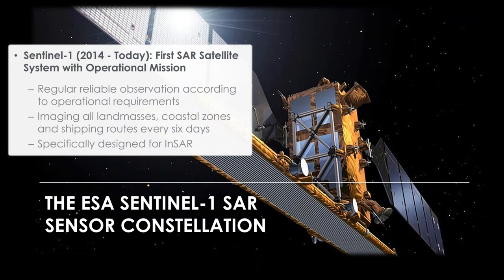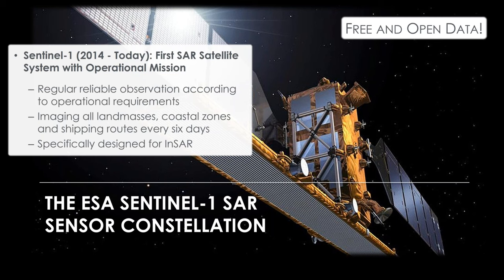Sentinel-1 was launched in 2014 — it's a constellation of two C-band radar satellites. It brought a pivotal change in SAR use as the first SAR satellite system with an operational mission, required to observe every point on Earth at a 12-day cadence, and some places in Europe at a 6-day cadence. Because it's a synthetic aperture radar, it is cloud-free and weather independent, imaging all land masses, coastal zones, and shipping routes every six to twelve days.